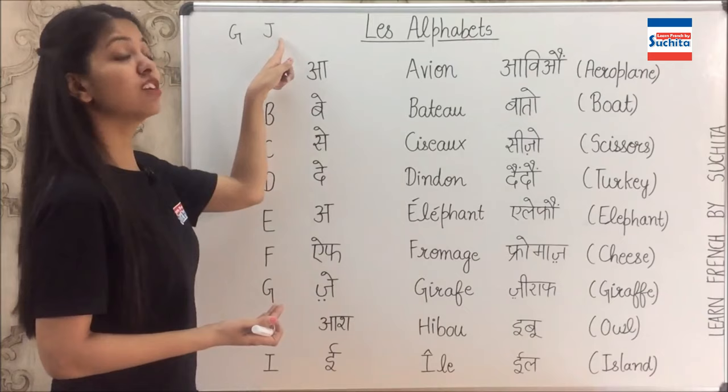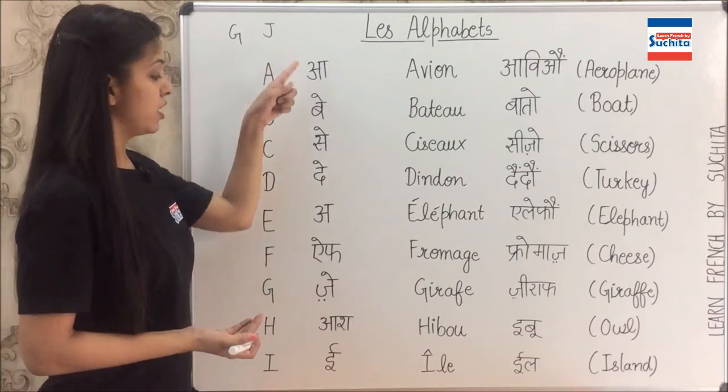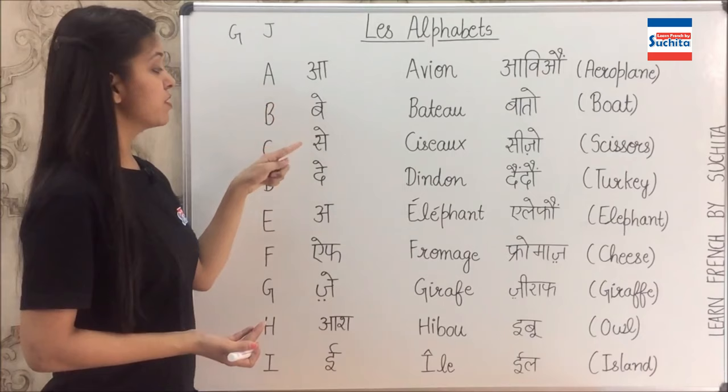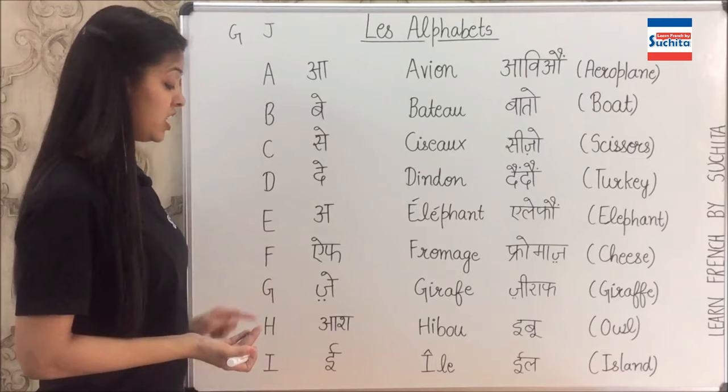Now continuing: G (ji), H (ash), I (i), J (zhé), K (ka), L (elle), M (emm).